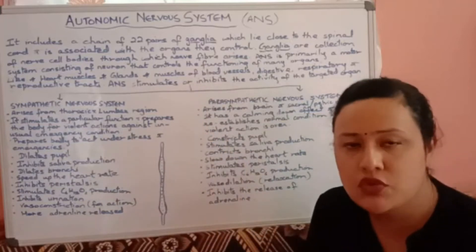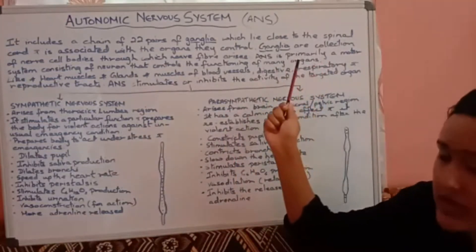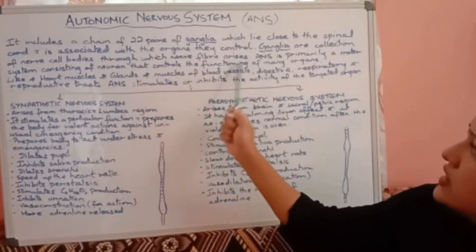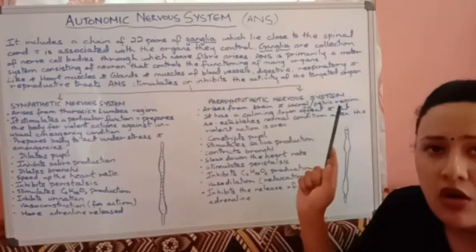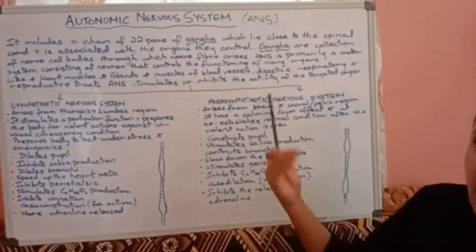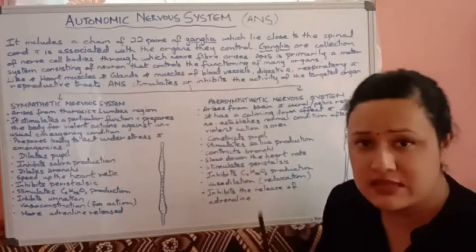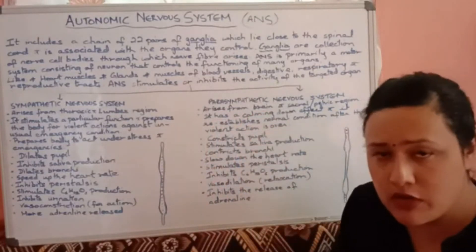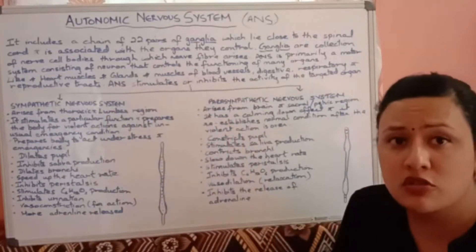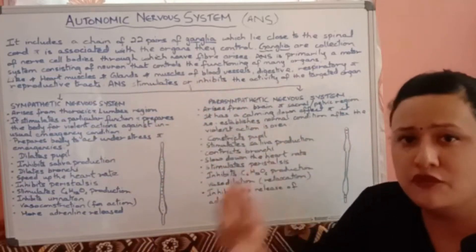The autonomic nervous system is primarily a motor system consisting of neurons that control the functioning of many internal organs — the heart muscles, glands, muscles of blood vessels, the digestive tract, the respiratory tract, and the reproductive tract. All of these are controlled by the autonomic nervous system.